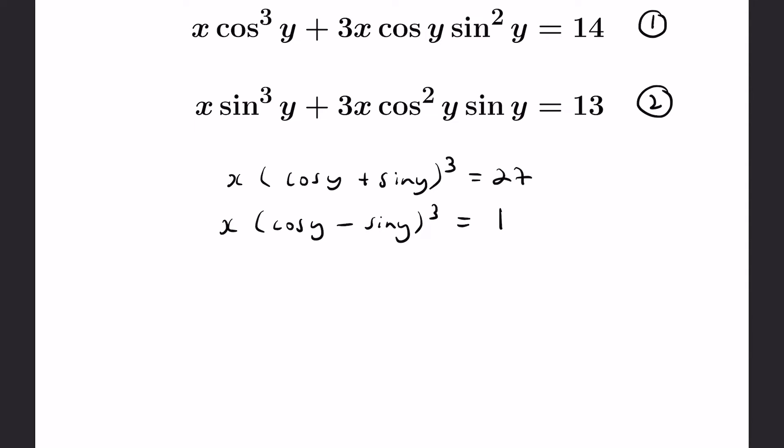So if you look at cosine y plus sine y as an expression, you can actually rewrite it in terms of one trigonometric function. Now the way to do this, and there's several ways to do this, is you could think about universally multiplying this quantity by the same amount. So we could multiply, for example, by the sine of pi over 4 or the cosine of pi over 4.